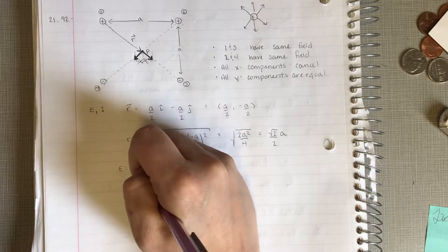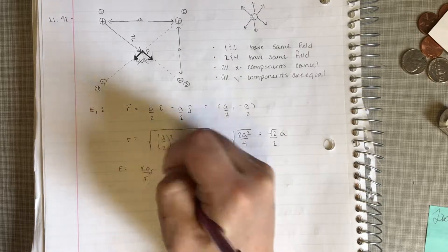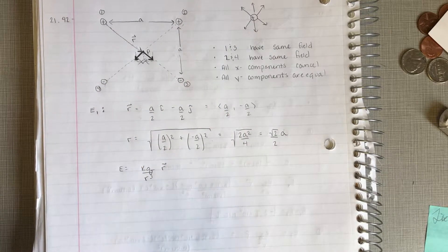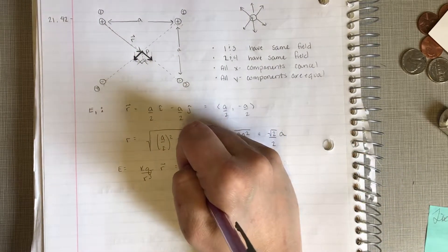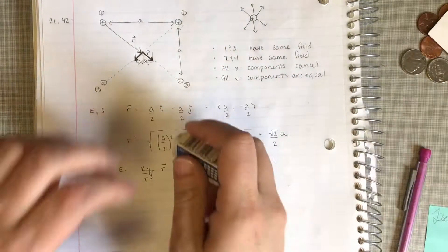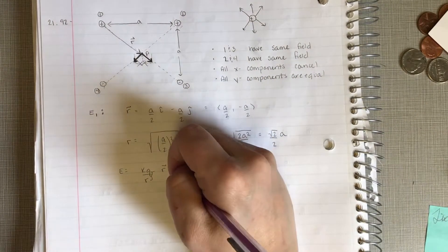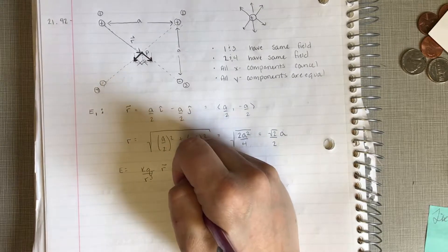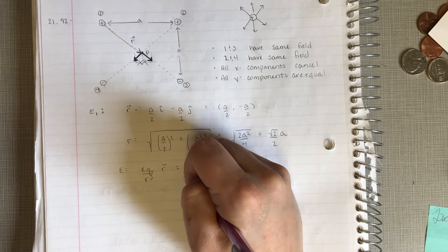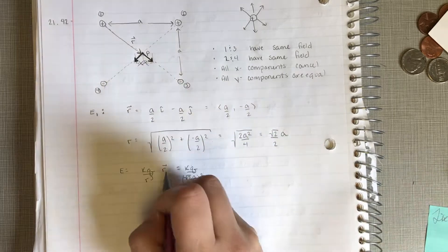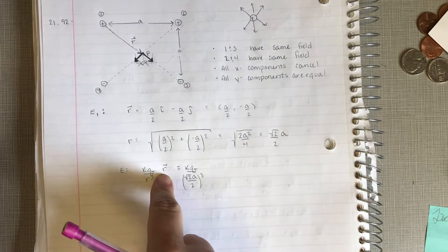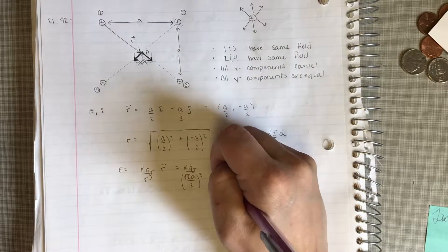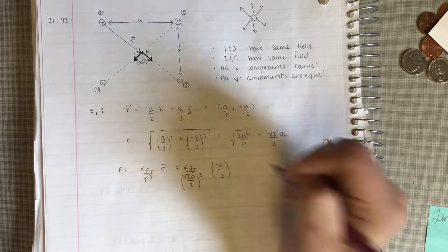So, now our E field is going to be kQ over r cubed, our vector, because I like doing it that way, but we'll do it the other way for you here in a sec. So, our k. Oh, wait. Well, this is algebraic. Never mind. Alright, sweet. Convenient. So, we have k, q, r cubed, and then we root 2a over 2 cubed. Oh, this is ugly. And our r vector, now we said that the only part we care about is our y component, and our y component is minus a over 2.